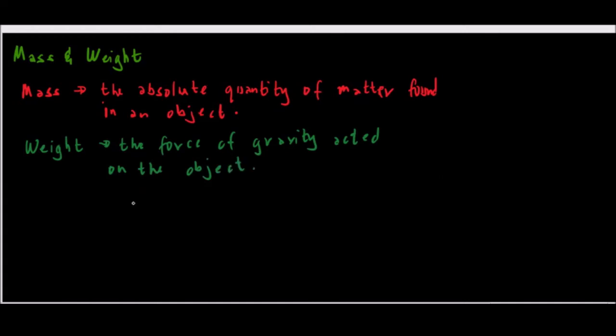We have here the definition of mass and weight, so we could see now their difference. Mass is the absolute quantity of matter found in an object, while weight is force - the force of gravity acted on the object.